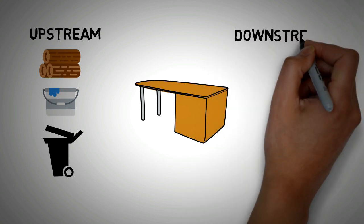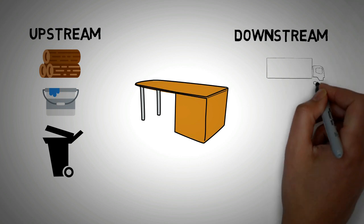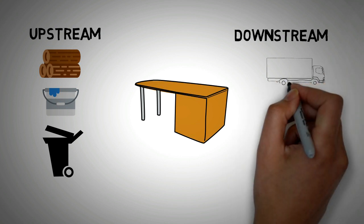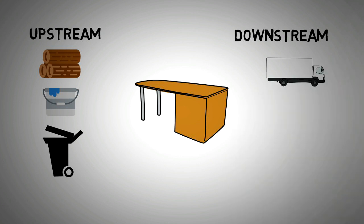Then the table is shipped to all the distribution centers. The emissions that result because of the distribution of the table and its disposal once it's thrown away are downstream emissions.